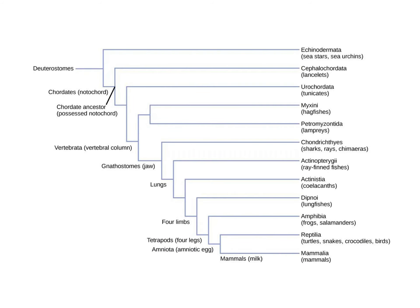Looking at our phylogenetic tree, we can see that birds are classified with Reptilia. They are amniotes, they have four legs or limbs, so they are tetrapods. They breathe using lungs, they have a jaw, they have a vertebral column, they are chordates, and they are deuterostomes.